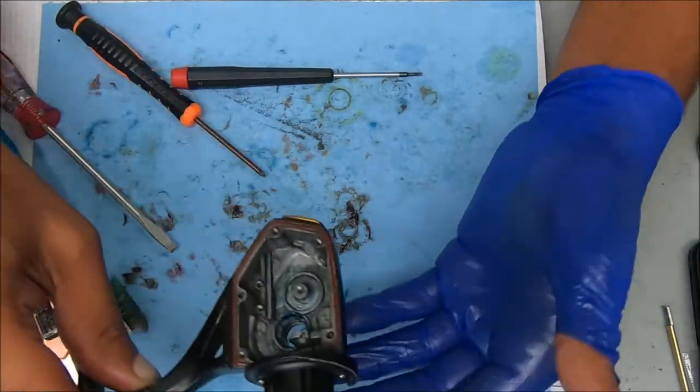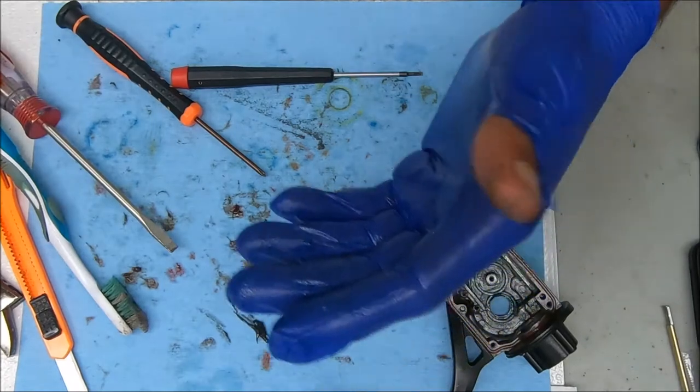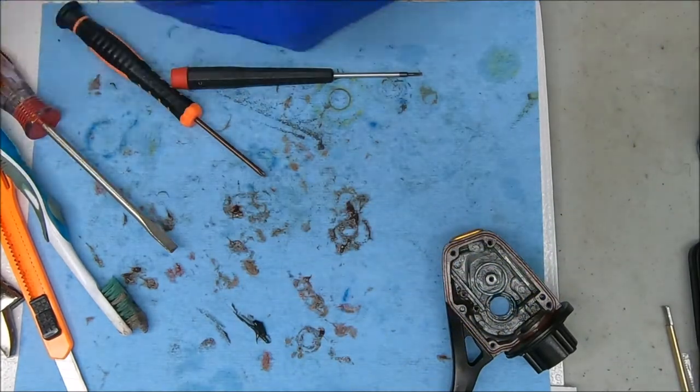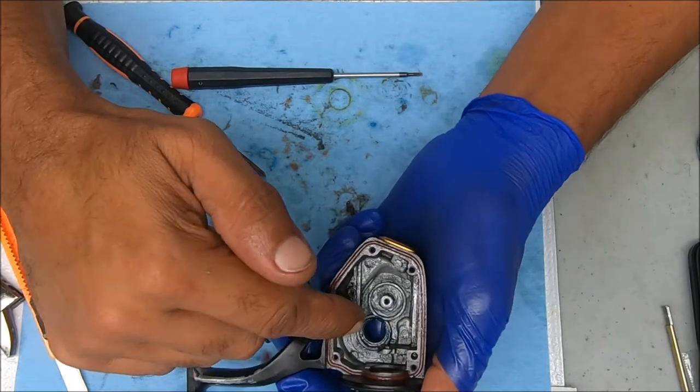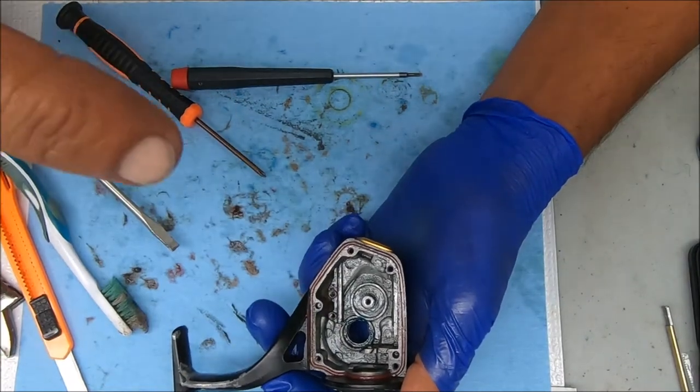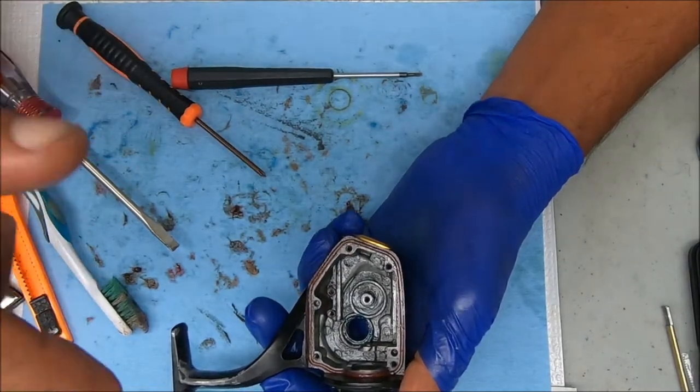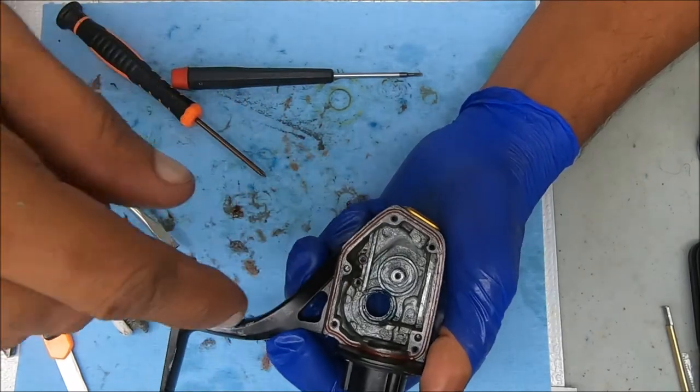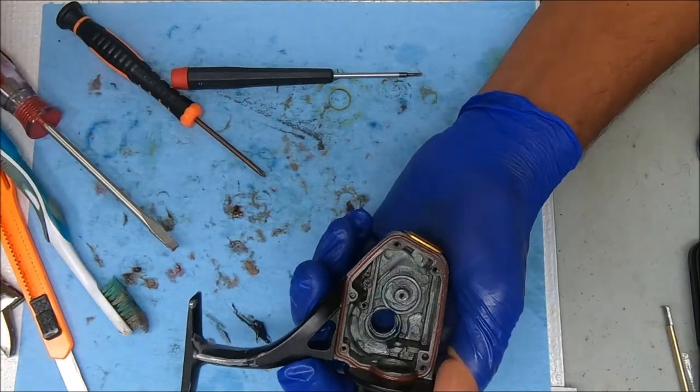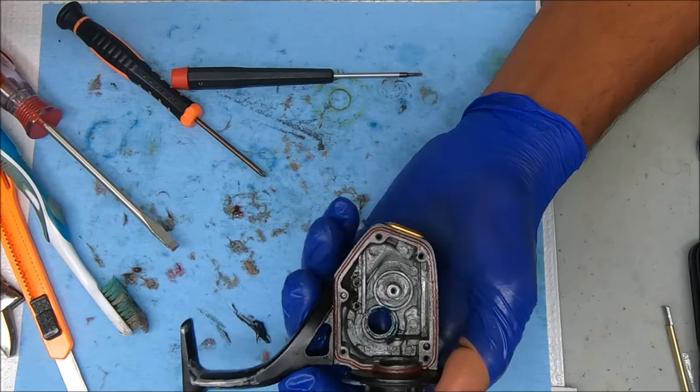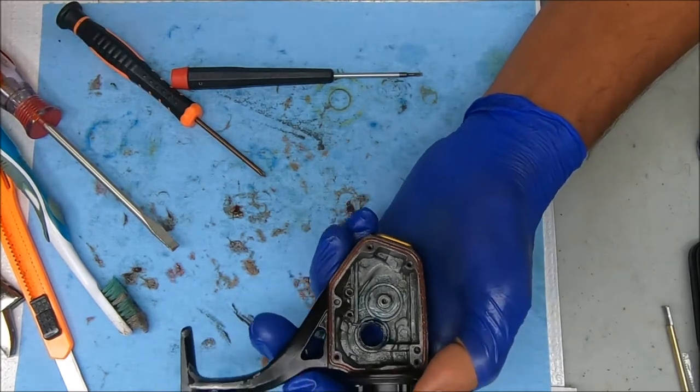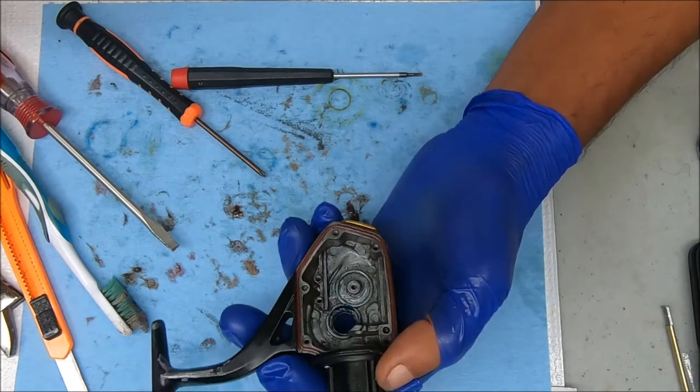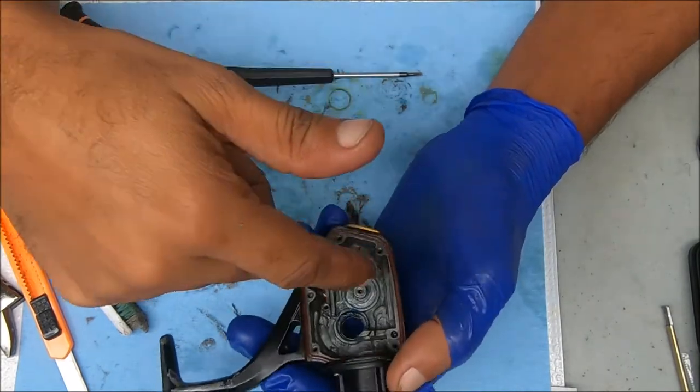I'm not saying all tackle shops do this, I'm just simply saying that some might. So if you take a reel to someone and have them service it for you, a good way to tell what they did, or a clue to tell what they did, is to just open the side housing up, the side case here. And if you saw what I saw or when I first started this video, then that's pretty much all they did, whoever it was.